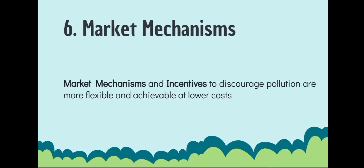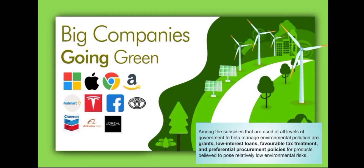Number six is market mechanisms — or in regular terms, incentives. Incentives are used to discourage pollution and are more flexible and cost-effective. Many companies have started to utilize green technology. Among the subsidies used at all levels of government to manage environmental pollution are grants, low-interest loans, favorable tax treatment, and preferential procurement policies — and those benefits motivate companies to commit to going green.